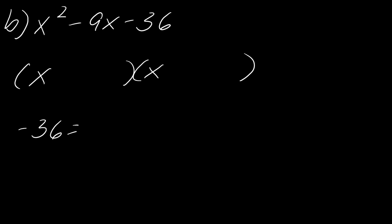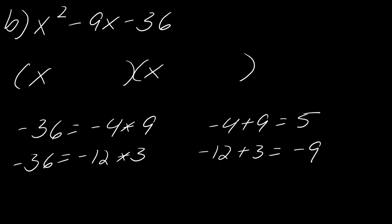Let's see, negative 36. Well, that would still be negative 4 and 9. But in this case, negative 4 plus 9 is not going to give me what I need. So that's going to give me 5. So that's the wrong choice. So now we need to think of some other things that would multiply to this. What if I did negative 12 and 3? So negative 12 plus 3, oh yep, that'll add to negative 9. So I know that that's the right one.